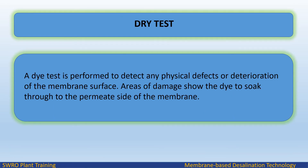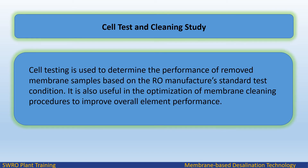Dye test: A dye test is performed to detect any physical defects or deterioration of the membrane surface. Areas of damage show the dye soaking through to the permeate side of the membrane. Cell test and cleaning study: Cell testing is used to determine the performance of removed membrane samples based on the RO manufacturer's standard test conditions. It is also useful in the optimization of membrane cleaning procedures to improve overall element performance.